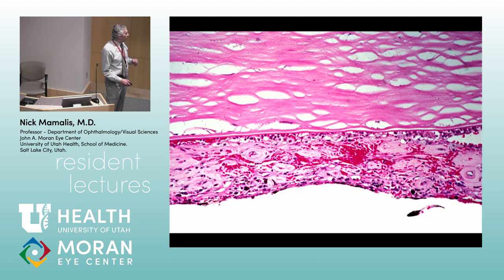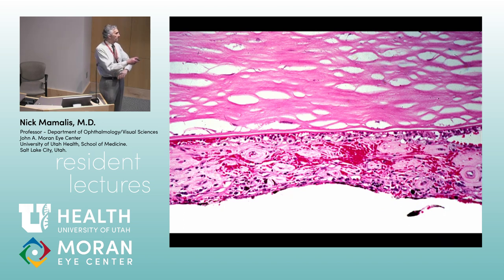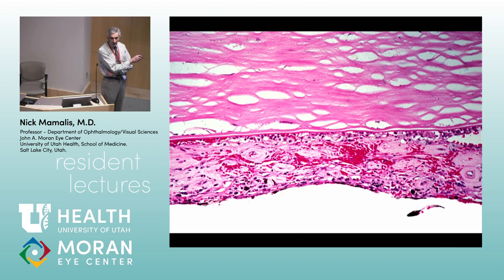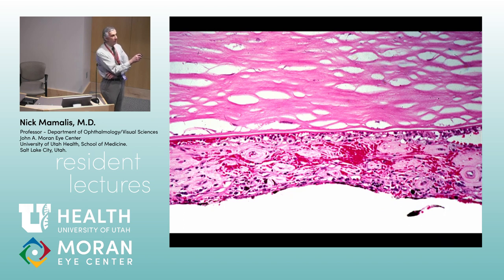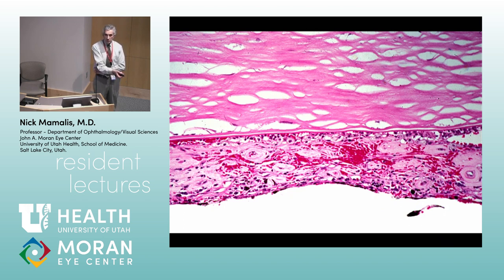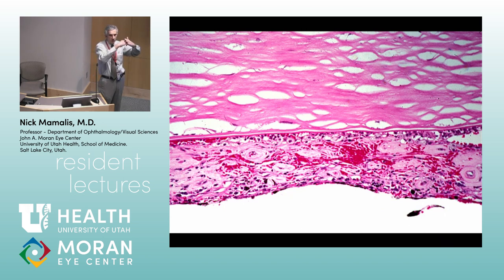Here's the trabecular meshwork, and here's the iris totally stuck to the peripheral cornea, closing off that angle — secondary angle closure. Here we're looking at an iris closing off an angle secondarily. There's a lot of red — this makes me think about blood vessels forming here. There are little blood vessels on the anterior surface of the iris. You normally should not have a network of little blood vessels on the anterior surface of the iris. This is neovascular glaucoma — these abnormal blood vessels grow on the surface of the iris, grow into the trabecular meshwork, and close it off.